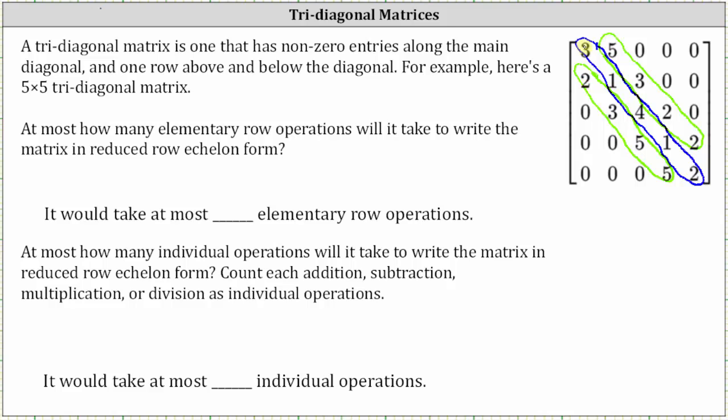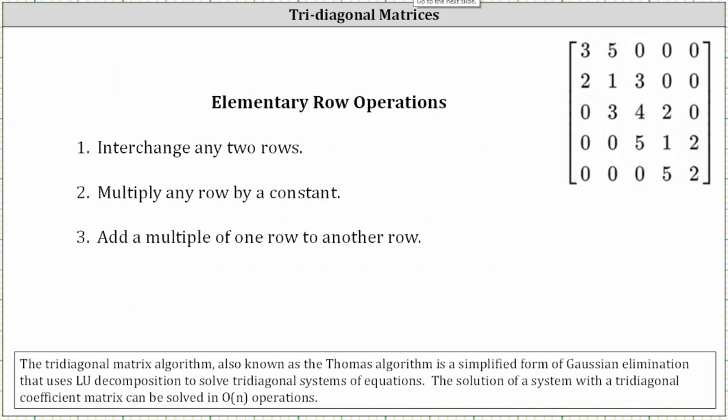Let's review elementary row operations. Elementary row operations are: number one, interchange any two rows; number two, multiply any row by a constant; number three, add a multiple of one row to another row.